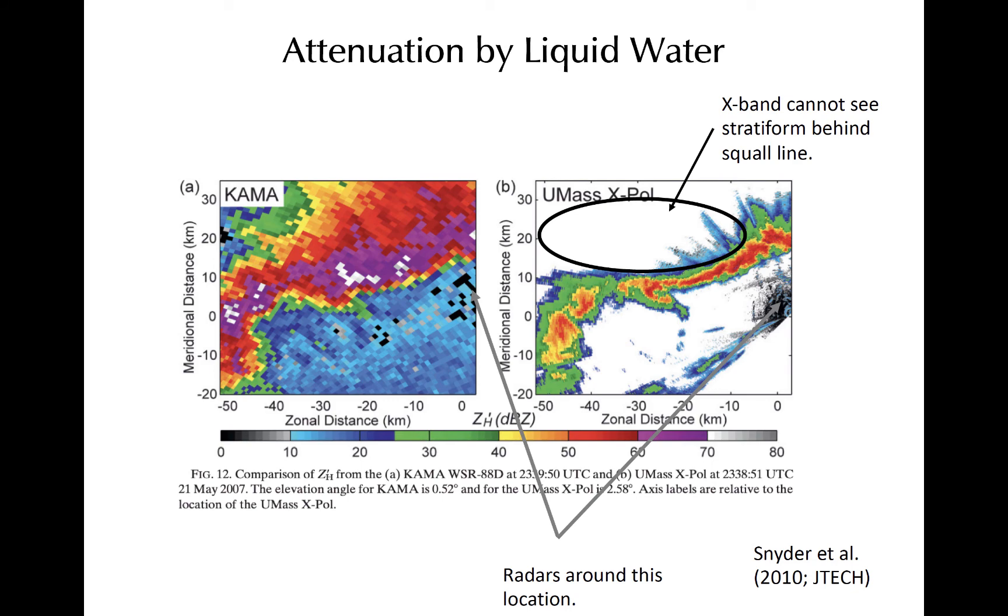The example shown here, moving along to talking about attenuation, shows two plots of reflectivity derived from data from two different radars near the same location. This is to show an example of how the size of particles present may not necessarily correspond to the reflectivity that you see on a particular radar display. The left panel represents S-band reflectivity, while the right panel illustrates X-band reflectivity. Remember, the X-band radiation is at a higher frequency, shorter wavelength.